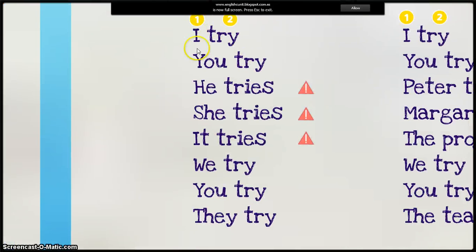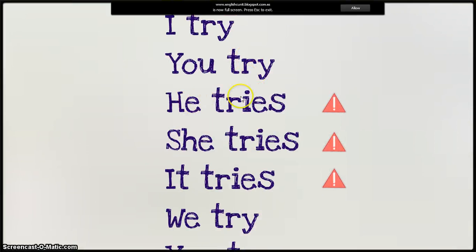Examples. I, you, he, she, the subject. Try, try, the verb. He tries. Notice, no Y. Instead, I, E, S. She tries. No Y. I, E, S. It tries. No Y. I, E, S.